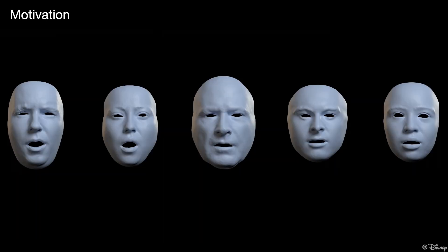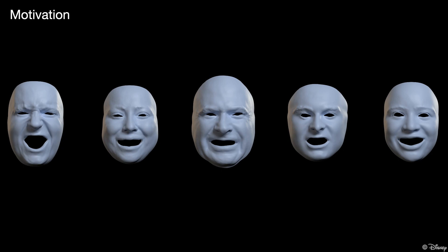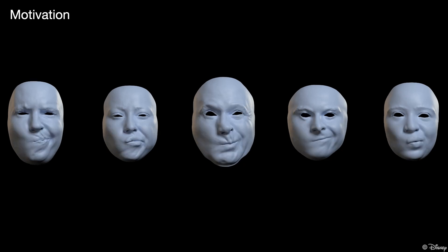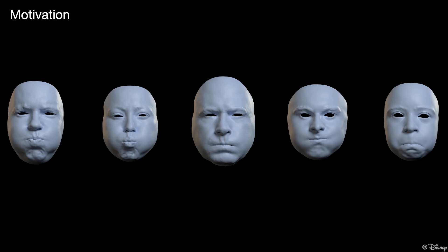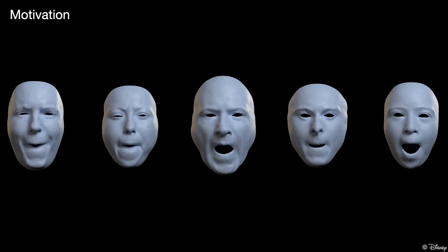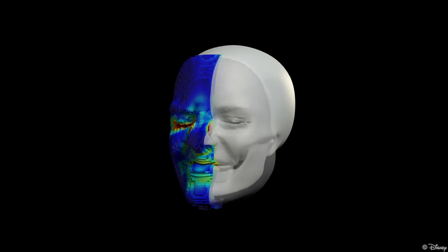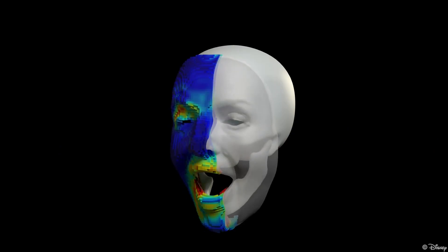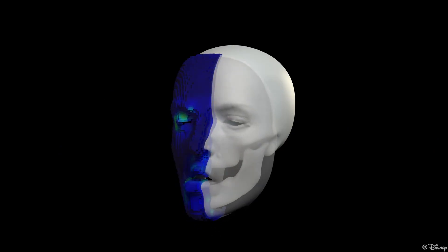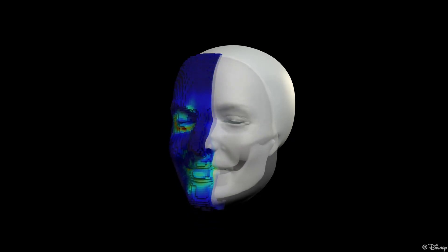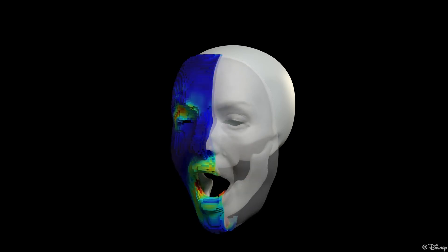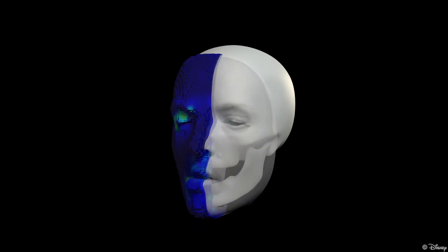In addition, for the semantically same expressions, different identities have their own muscle actuation styles. This is always baked into each identity's unique blendshape basis, unable to be edited by the artists. Our solution leverages physics-based simulation that considers underlying anatomical features, which naturally bypasses these issues, offering a more realistic approach to facial animation and increased artistic control.